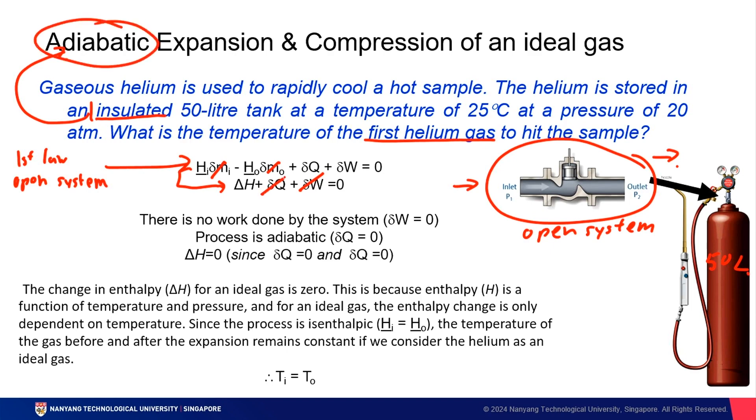Hence, there is no change in heat. Therefore, ΔH equals zero. We can rewrite this as H input minus H output equals zero. We can also rewrite this as H input equals H output. What does this mean? It means that the process is isenthalpic.